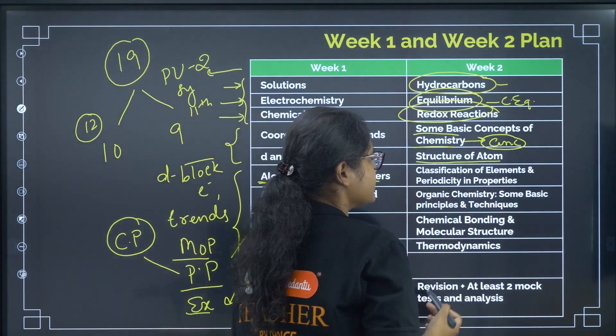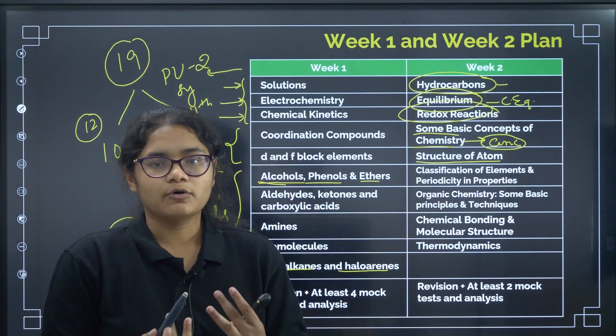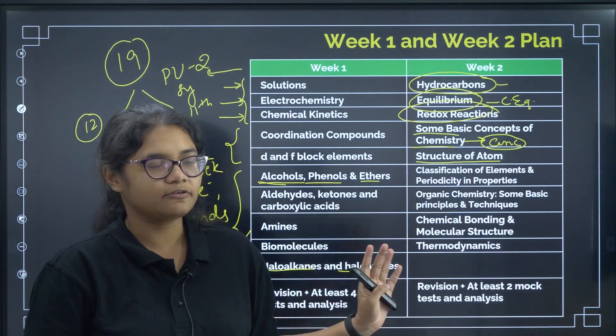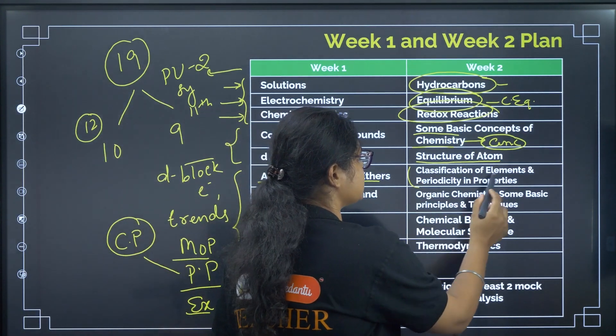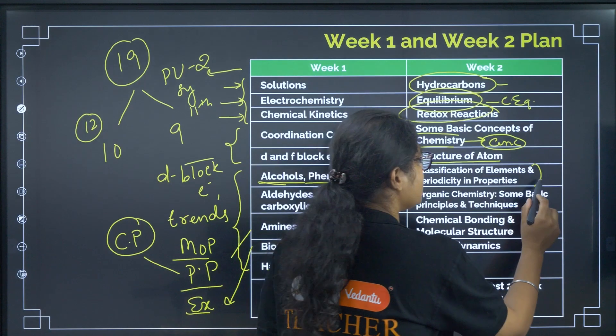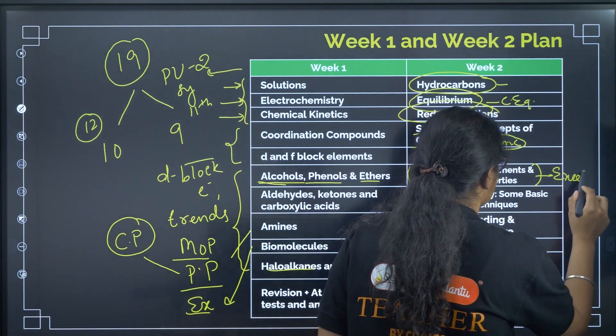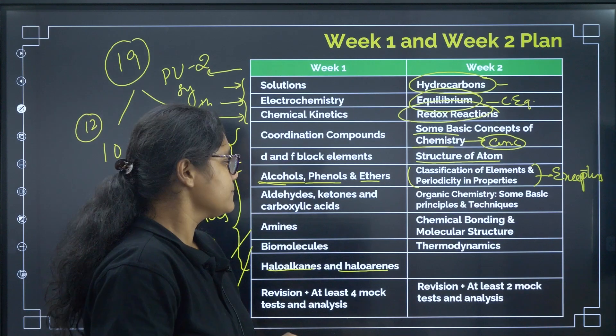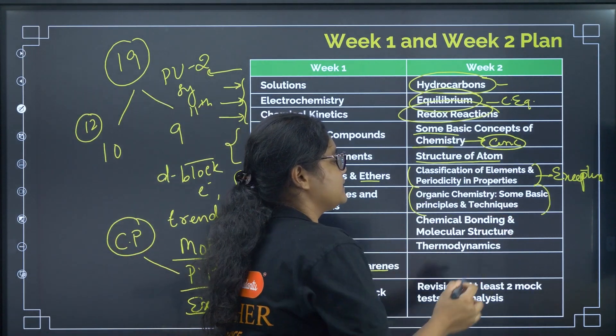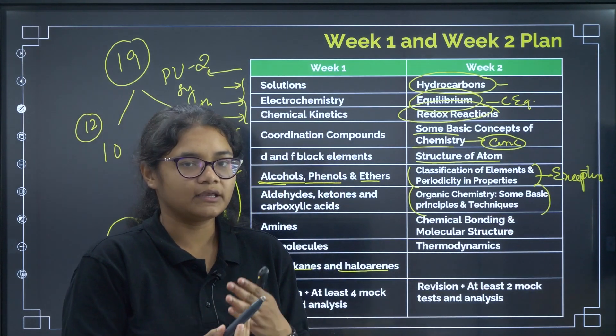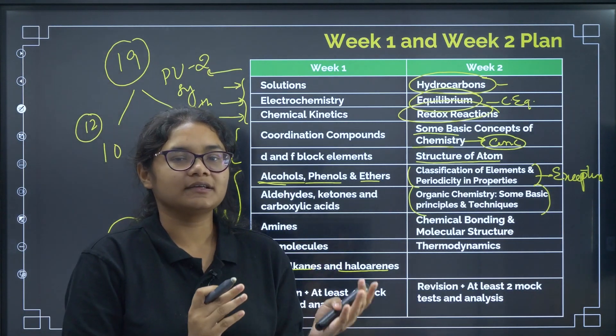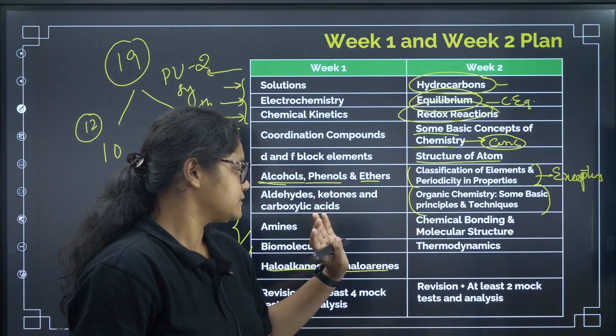Classification, this is very easy and scoring topic again. Here, give more importance to exceptions. There are a lot of exceptions. Please give importance here. Organic chemistry, some basic principles and techniques, again the GOC, carbocation, carbon anion stability, resonance, plus R, minus R, some basic things you can read from this part.